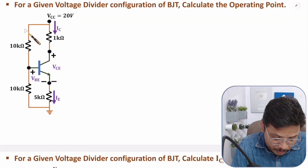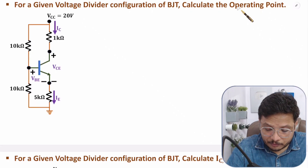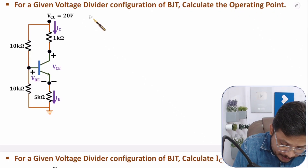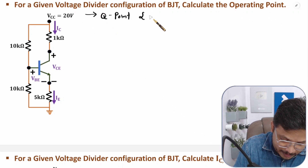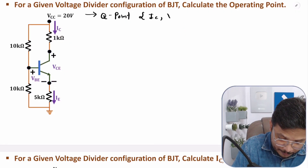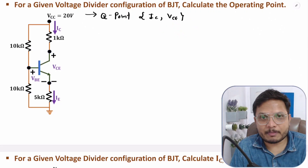Here we have a voltage divider bias configuration and we need to find the operating point. Operating point means we need to find the Q point — that is, the output current IC and output voltage VCE. So let us solve this step by step.